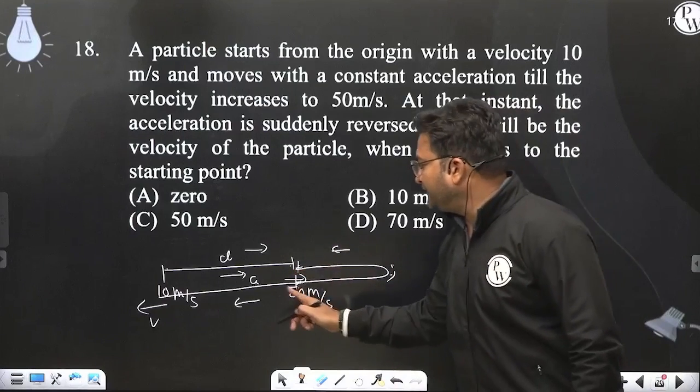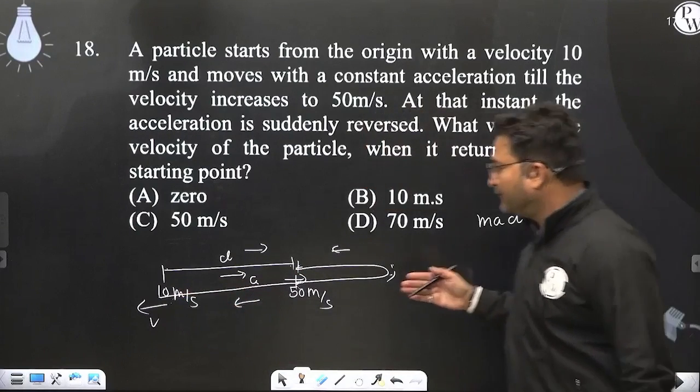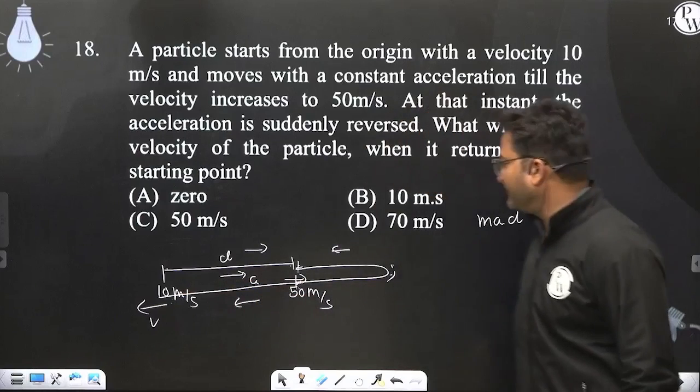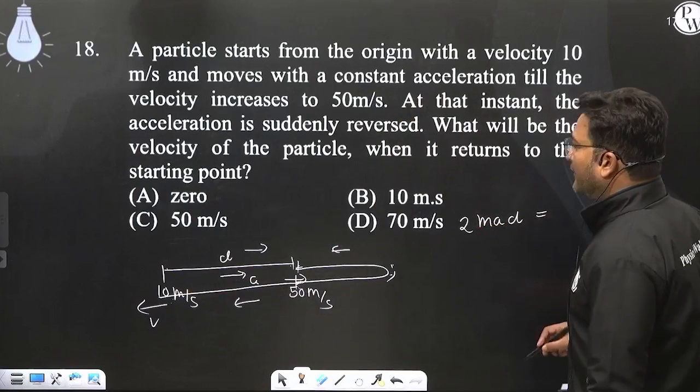Then here. So work done is the force left and displacement left. So how much will it be? Then twice of mad. Work done is the same.